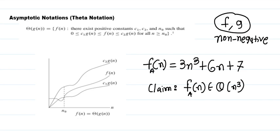The notation says: if my function f(n) is sandwiched between g(n), meaning f(n) is in this particular region, then I can say that f(n) belongs to theta of g(n). Before we understand this definition, let's recall the requirements when we talk about asymptotic notations.